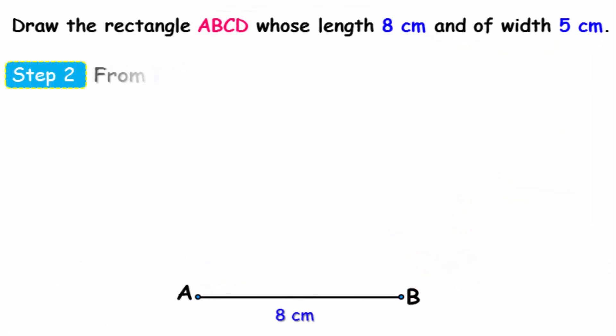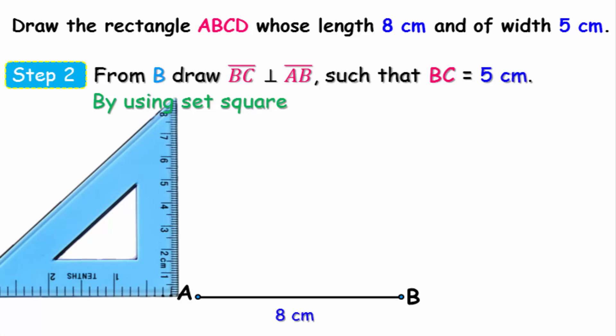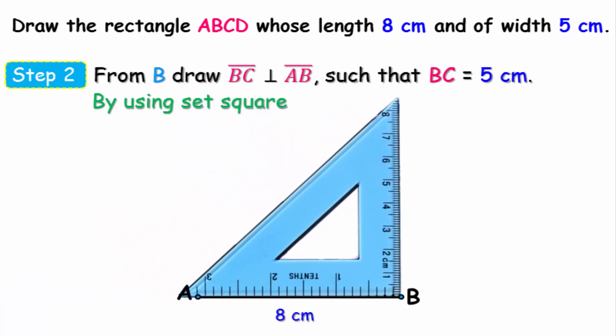The second step is that we stand at point B and then draw a line that is perpendicular to the straight line AB such that the length of BC equals 5 centimeters, but this time using the set square as you can see now.